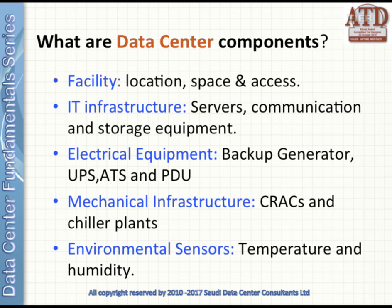The data center components include: first, the facility — its location, total space, and physical access. Second, the IT infrastructure like servers, communication, and storage equipment. Third, electrical equipment such as backup generators, UPS, ATS, and PDUs — we'll explain each of these acronyms later in detail. Fourth, mechanical infrastructure dealing with the cooling system like CRAC units and associated chiller plants. Fifth, environmental sensors such as temperature and humidity.